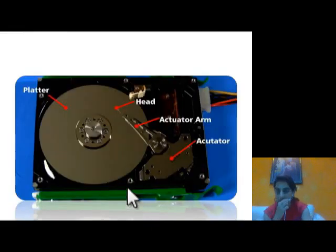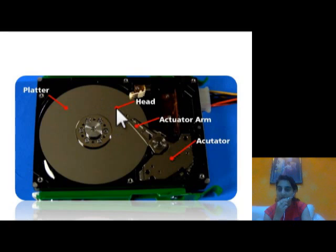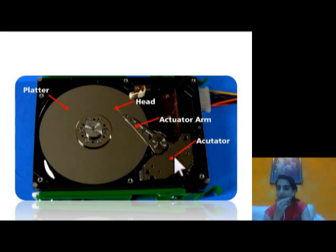This diagram shows the internal working of a hard drive. The platter sits at the center, and the spindle provides the rotational force. The read/write head writes data using magnetism. The actuator arm assists in positioning the head across the disk, and it is controlled by the actuator motor.